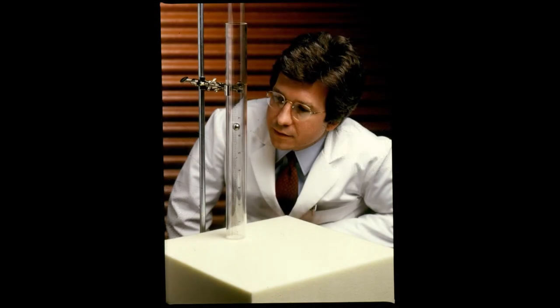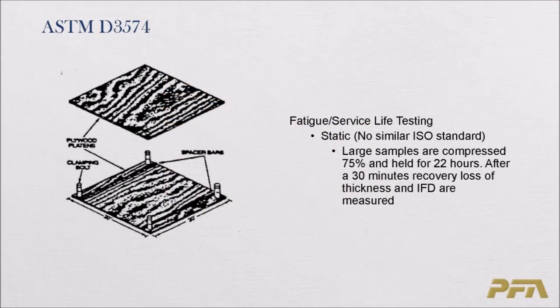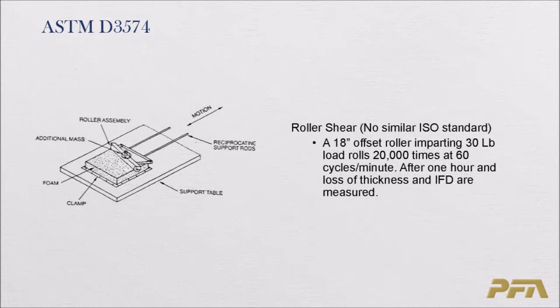The fatigue tests begin with static fatigue: large samples are compressed 75% and held for 22 hours; after a 30-minute recovery, loss of thickness and IFD are measured. The second fatigue test is roller shear — an 18-inch offset roller imparting a 30-pound load rolls 20,000 times at 60 cycles per minute. After one hour, loss of thickness and IFD are again measured.